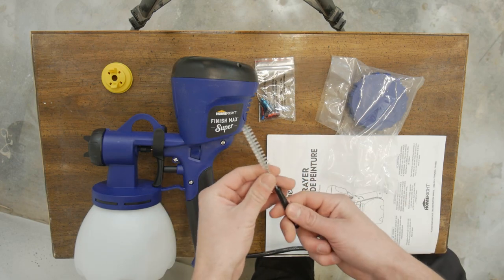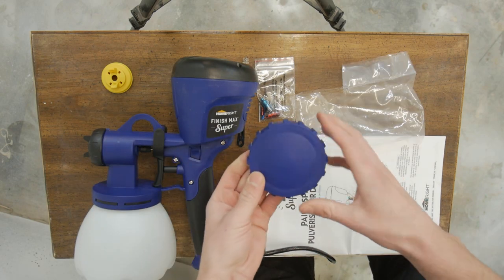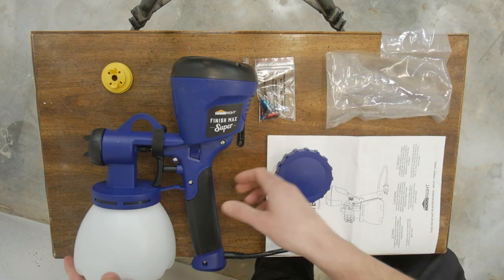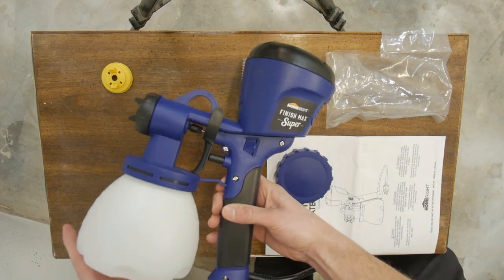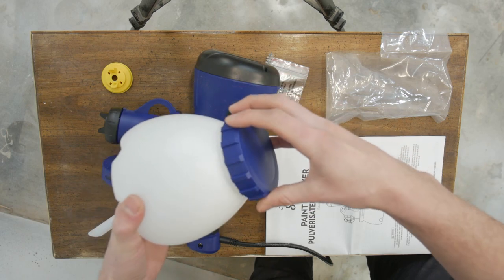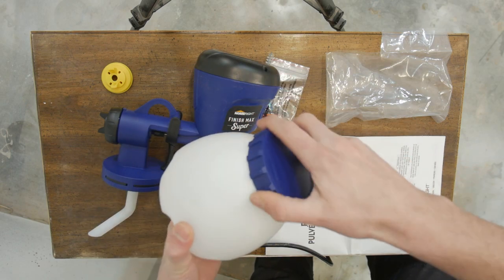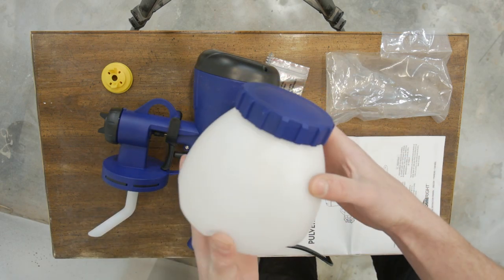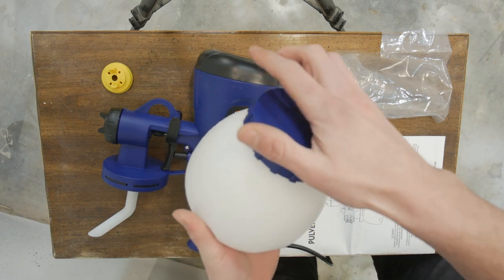What's pretty cool about this gun is, in between coats, instead of pouring your paint out, just put the top on, tighten it up, and then you don't need to worry about it drying up on you. That's pretty cool.